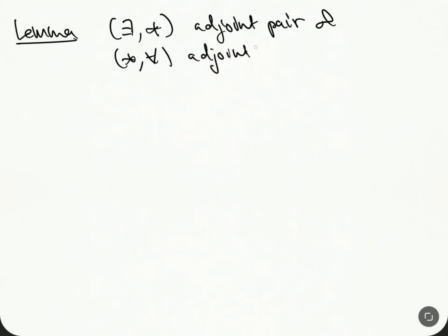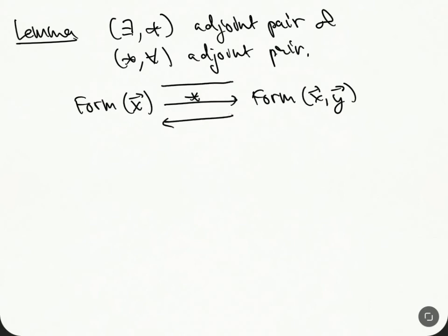And the lemma is the following. The lemma is that this guy and this guy is an adjoint pair. And this guy and this guy is an adjoint pair. So all in all, we have this dude here going to this dude over here. This one is just the stupid inclusion. And then I've got two guys going this way.